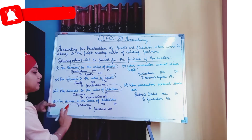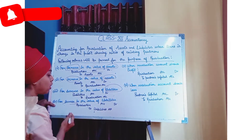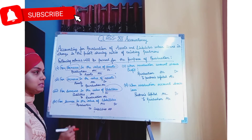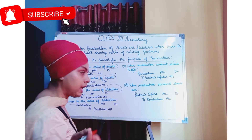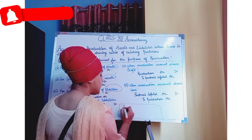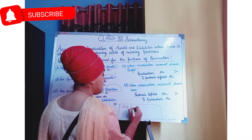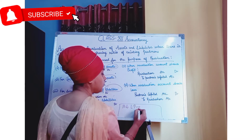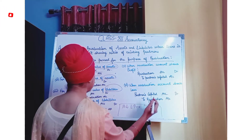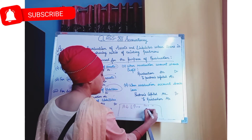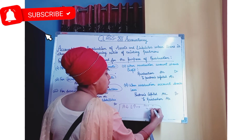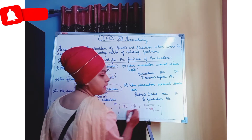To summarize: when liabilities increase, the entry is Revaluation Account Debit, To Liabilities Account. When the asset decreases, the entry is Revaluation Account Debit, To Asset Account. And if asset increases or liabilities decrease, the Revaluation account is credited.